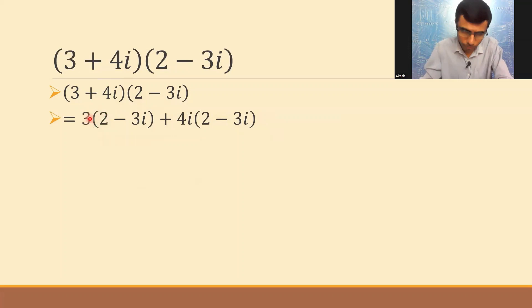3 times 2 is 6. 3 into minus 3i is minus 9i. And 4i into 2 is 8i. 4i into minus 3i, 4 into minus 3 is minus 12 and i into i is i square.